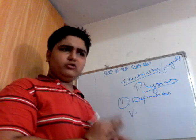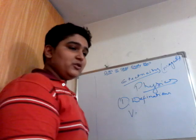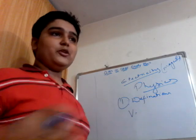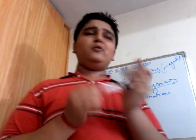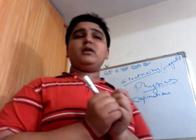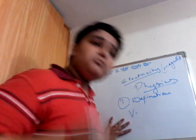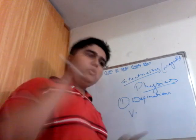Always try to complete chapters in less than five days — never exceed that. For Acids, Bases and Salts, I prefer two days. Pair of Linear Equations in Two Variables is an extremely big chapter — you can spend at least ten days on it. Triangles is also a very big chapter; about one week should be enough.